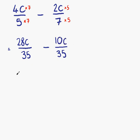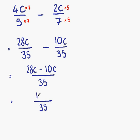We now have two fractions with the same denominator. So we can write this down as a single fraction over 35. We have 28c minus 10c on the numerator. The numerator can be simplified. 28c minus 10c is 18c.